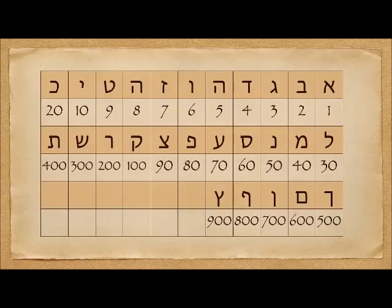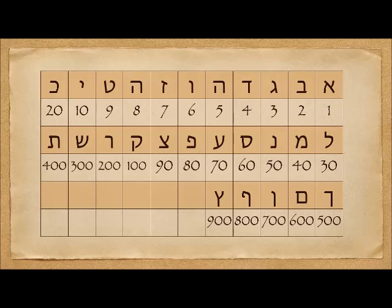For the Hebrew alphabet, these are the values used for each letter. Generally, the sofit — the final forms — are not used, although I have seen them used in some odd places here and there, but generally they're not used.